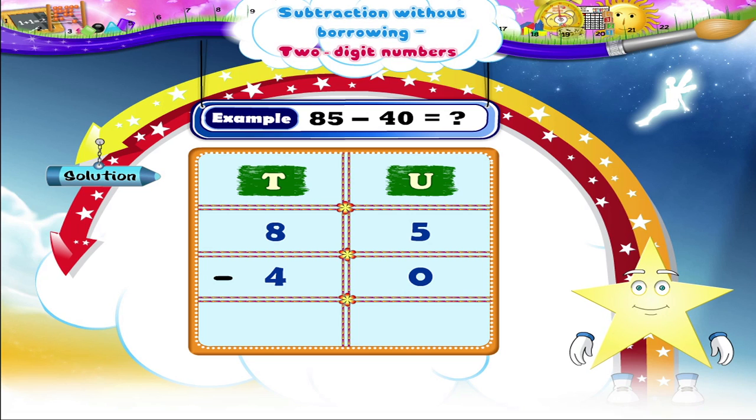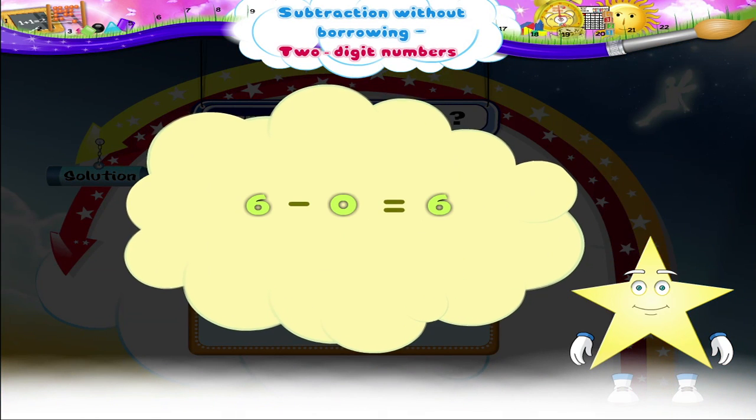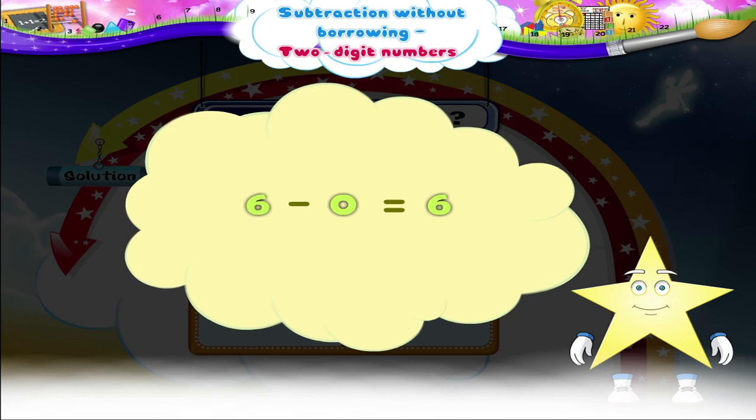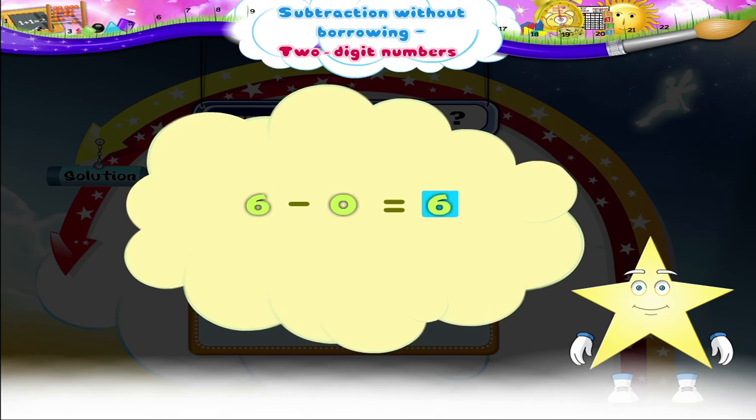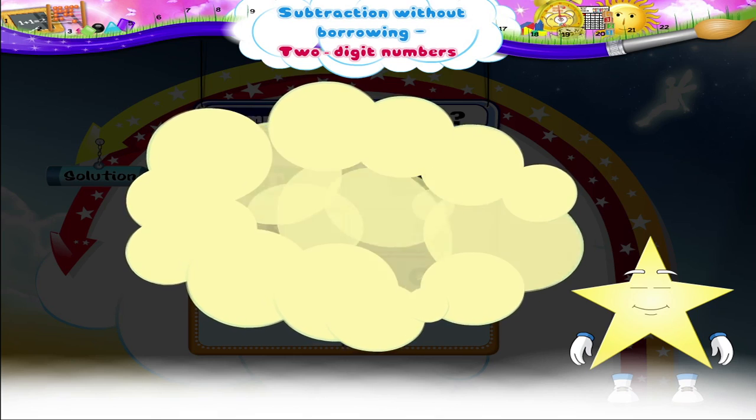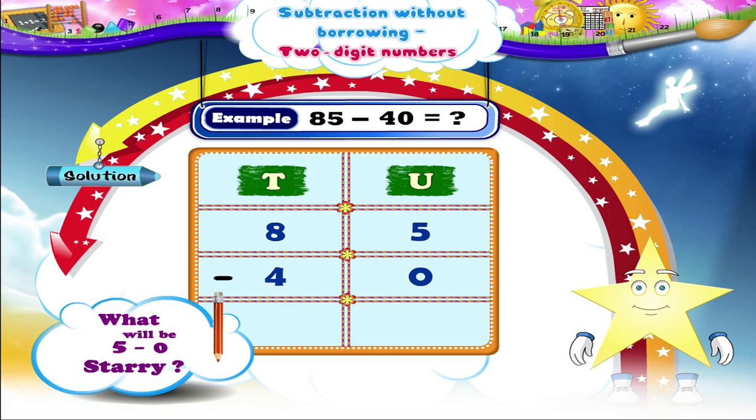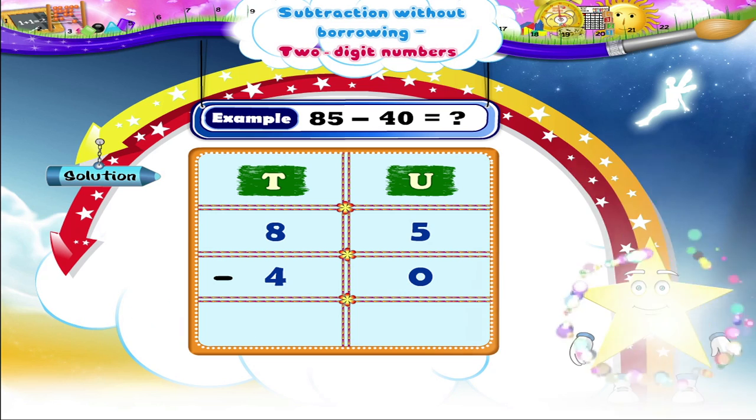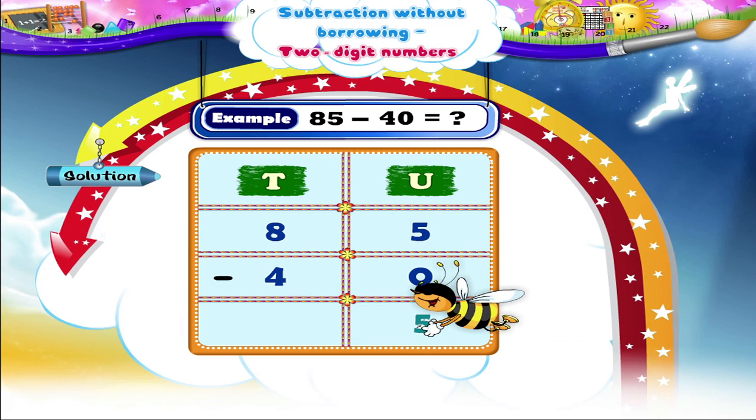Hey, Starry! We have to subtract 0 from 5. Remember, we had learnt that if we have to subtract 0 from any number, then the answer is the number itself. So, what will be 5 minus 0, Starry? Yes, 5.